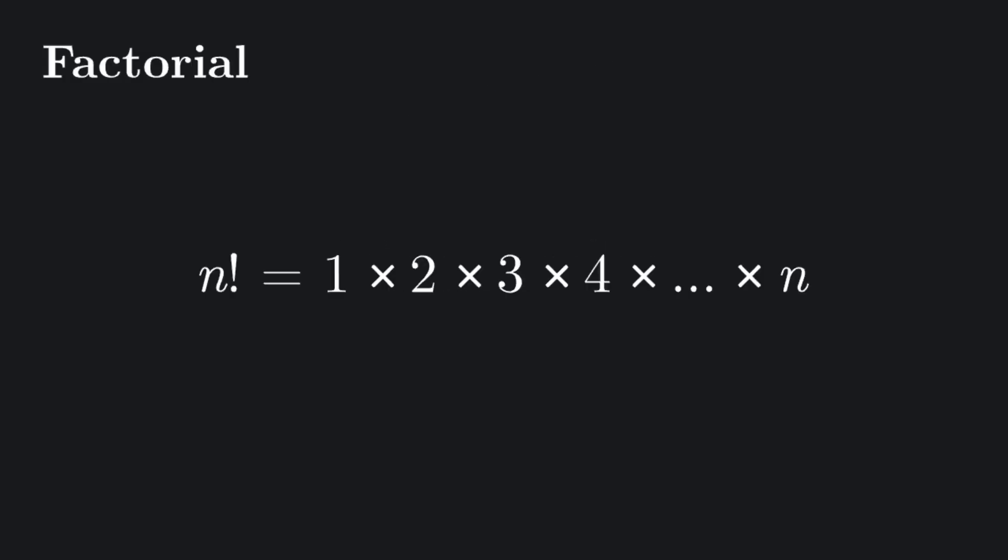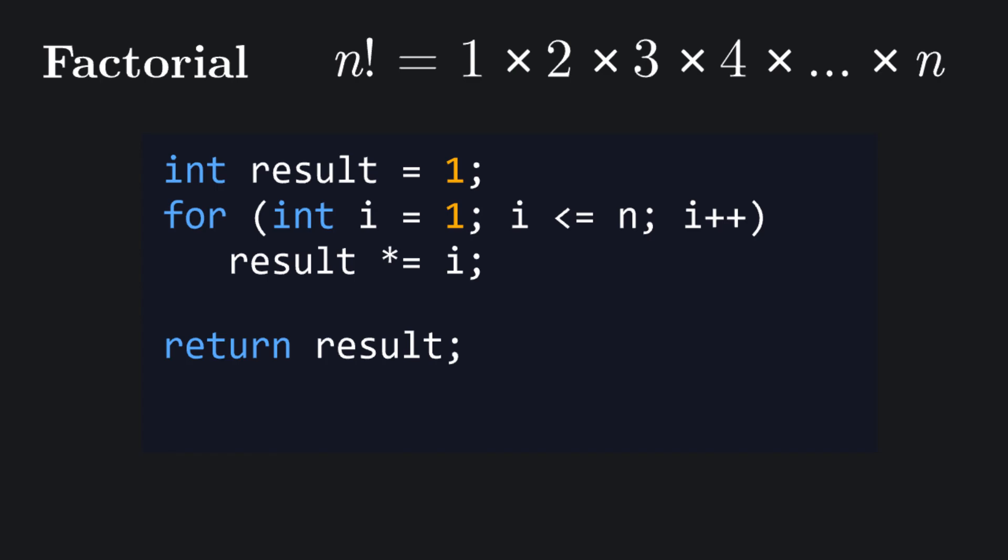Let's consider some examples. A program that computes the factorial function, which is the product of the first n positive integers, does exactly n steps before it terminates, so n is an upper bound to the number of iterations.